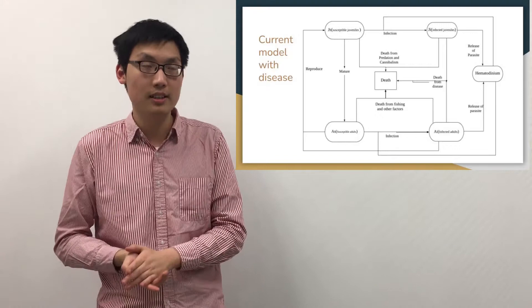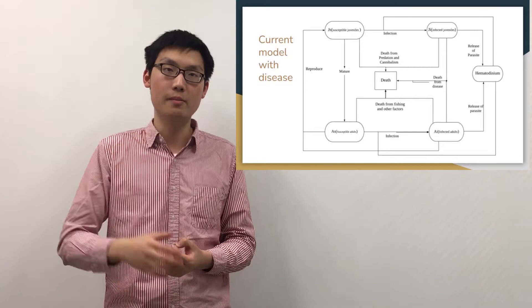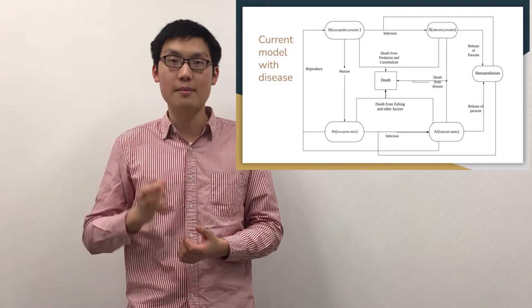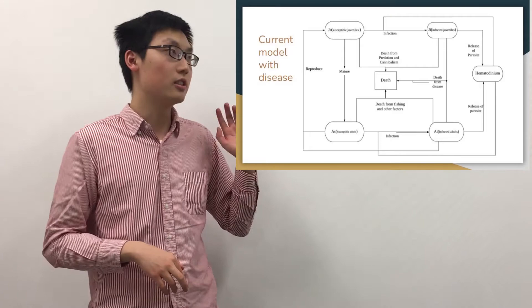There are two small details about this process. First, if juvenile crabs get infected, it is very unlikely for them to mature and become adult crabs. However, for other infected crabs, it is still possible to reproduce and produce young crabs. That's how the flowchart and the model work.